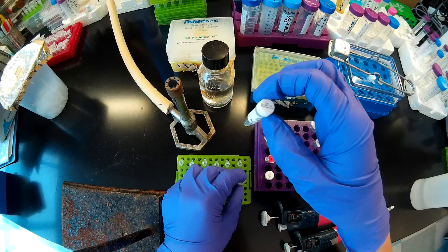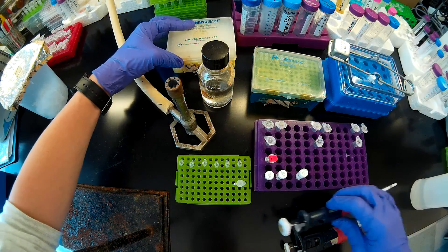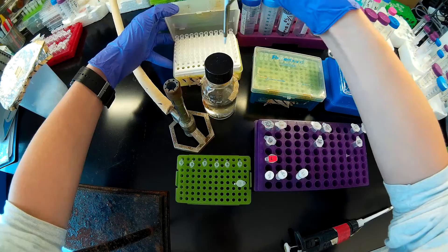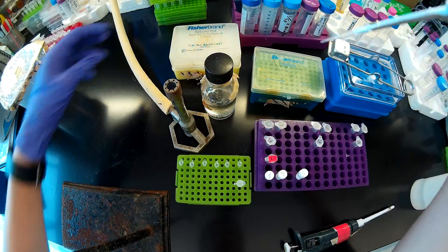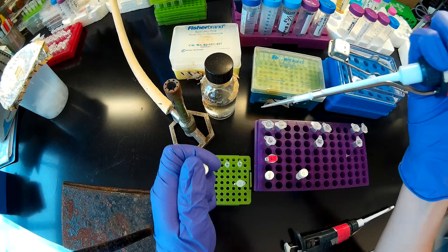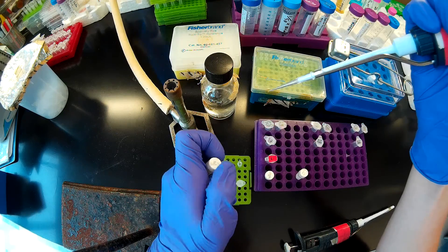I'm also going to add 62 microliters of the high GC enhancer because my amplicons have a GC content of about 80%. For guidelines on the use of the high GC enhancer, I would encourage you to refer to the NEB website.